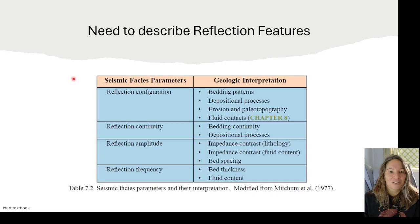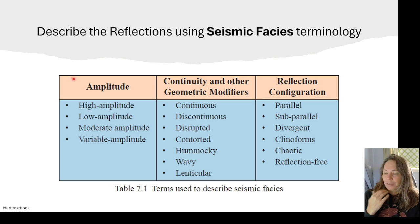Going back to the reflection features that I mentioned - continuity, configuration, amplitude, and frequency - we can break those down in terms of additional terminology. I've noticed looking through textbooks and reading a lot of papers that have been published that folks will use slightly different terminology, so it's not overly standardized. But typically we'll talk about high amplitudes and low amplitudes, you can have moderate amplitudes and then variable amplitudes, and of course all of this is relative to other features in the seismic. In terms of continuity or geometries, we'll talk about continuous, discontinuous, disrupted, contorted, hummocky, wavy, lenticular.